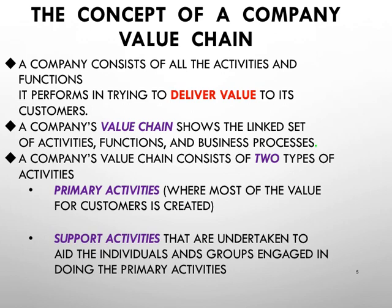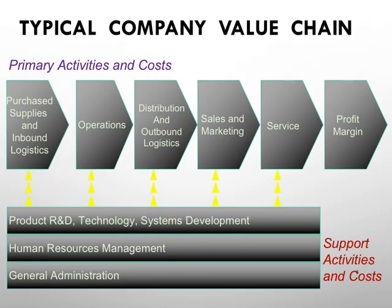There is a primary value chain and a secondary value chain — both are important. The primary is directly related to the operations of the business. For a hotel, that's housekeeping, maintenance, the front desk, pool staff. For manufacturing, it's actually producing goods — cars, TVs, clothes. You buy raw materials, produce the goods, distribute them, carry out sales and marketing, and provide after-sales service.